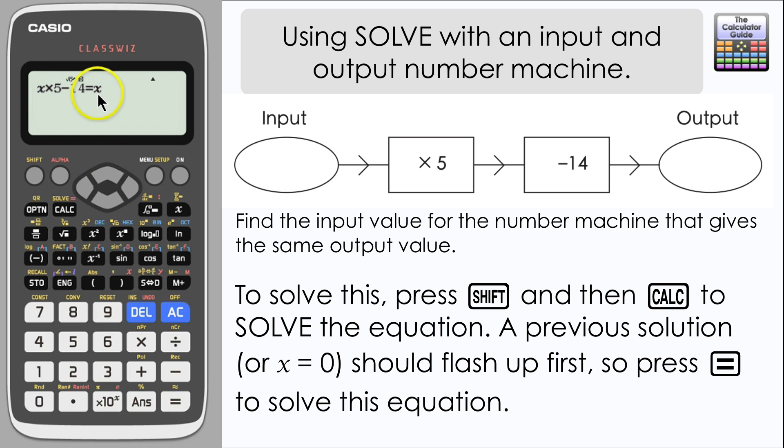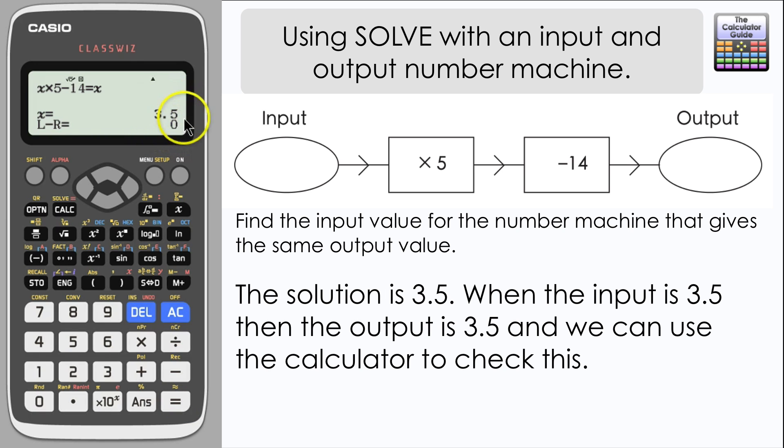In order to solve the equation, we need to press shift and calc which does the solve function. There will be a number displayed up here that is a previous answer, or it could be zero if you've not used it before. If you press equals then we get the answer to this particular equation. In this case it's 3.5, so when the input is 3.5 the output is 3.5.